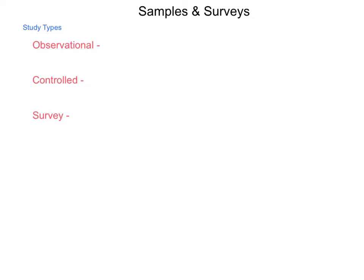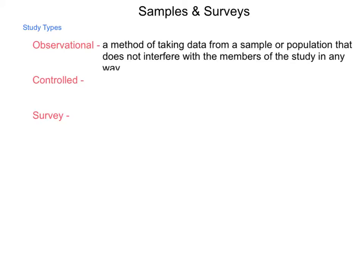When we conduct a study, there are two different types, and surveys can be part of that. The first is an observational study, which is a method of collecting data from a sample or population that does not interfere with the members in any way. A lot of times in research shown on television, they show a room with people in it and others standing behind a glass wall. On the inside, that wall appears to be a mirror, so the subjects can go about their normal activity while observers watch how they interact naturally.